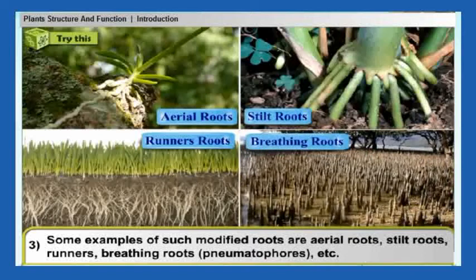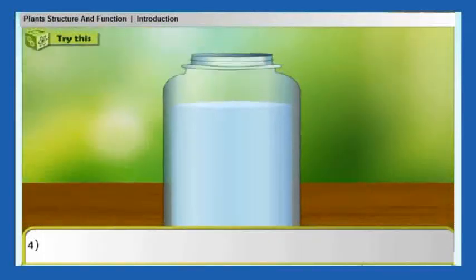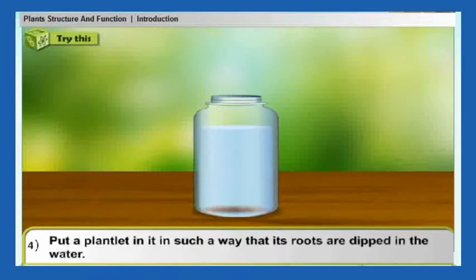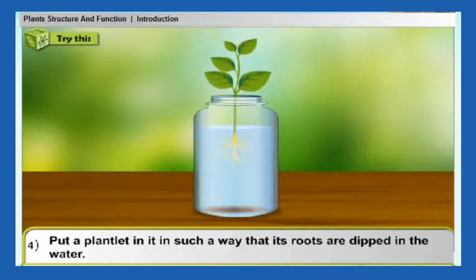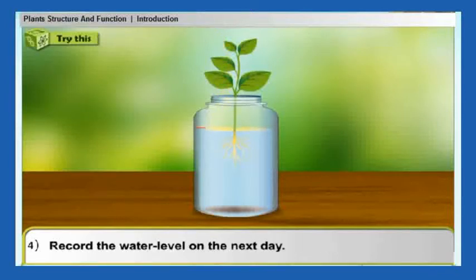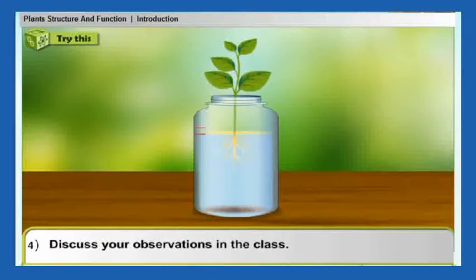Activity four: take some water in a small glass jar. Put a plant in it so that its roots are dipped in the water. Mark the water level on the jar and add five milliliters of oil to the water. Record the water level on the next day and discuss your observations in the class.